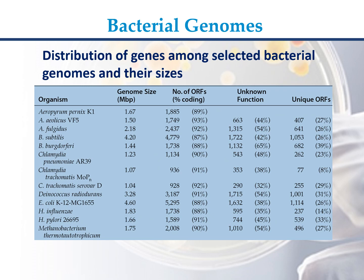Archaeoglobus fulgidus: genome size 2.18 Mb, 2437 ORFs (92%), unknown function 1315 (54%), unique ORFs 641 (26%). Bacillus subtilis: genome size 4.20 Mb, 4779 ORFs (87%), unknown function 1722 (42%), unique ORFs 1053 (26%).